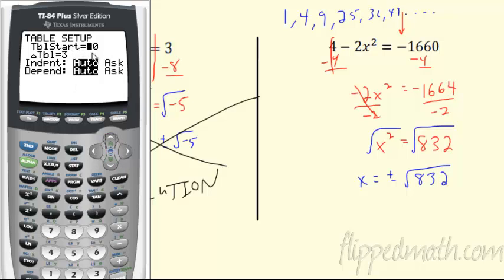This is table start. Where do I want to start? I don't want to start at 50. I want to start on 0 or 1. And then this is what you want to count by, the change. This little triangle means change. Change in table. Let's count by 1s. So double check your table. Make sure it's set up like this to hook you up for this little trick here. Then go back to table.